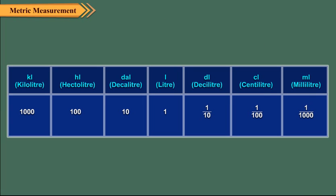The basic unit of capacity is liter. The higher units are obtained by adding the prefixes deca, hecto, and kilo.